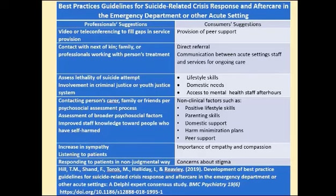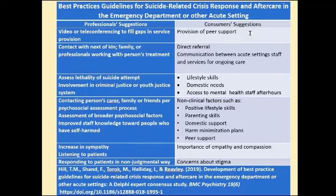This table by Hill and colleagues provides best practices guidelines for suicide-related crisis response and aftercare in an emergency acute setting and includes consumer recommendations. It is always important to include the people who would benefit from whatever program one is providing. The consumers offered suggestions that we will see how they mesh with the professional suggestions on the left side of the screen. Consumer input included the need for peer support, direct referral for services, and communication between acute setting staff and services for ongoing care — a very critical piece.